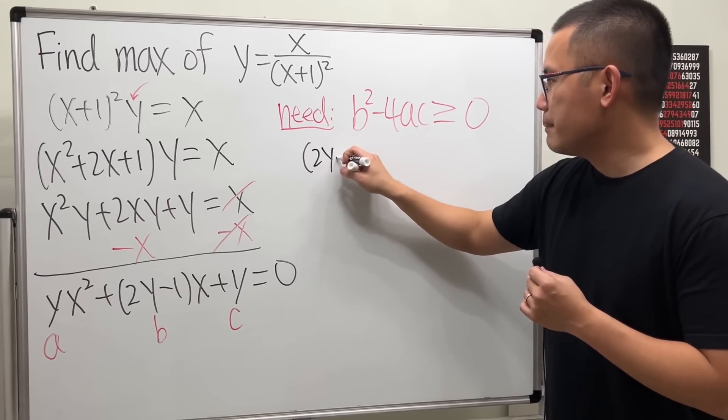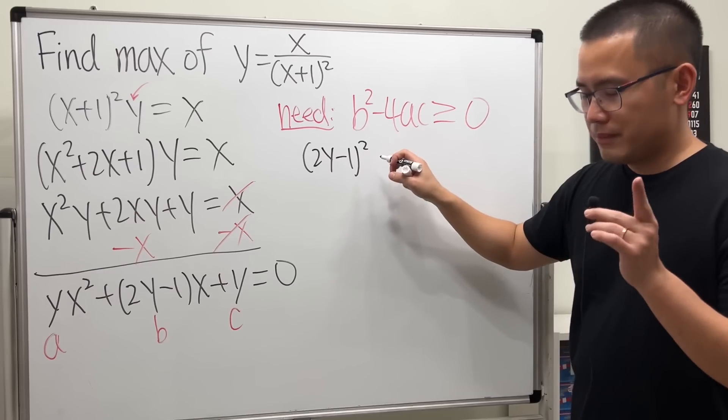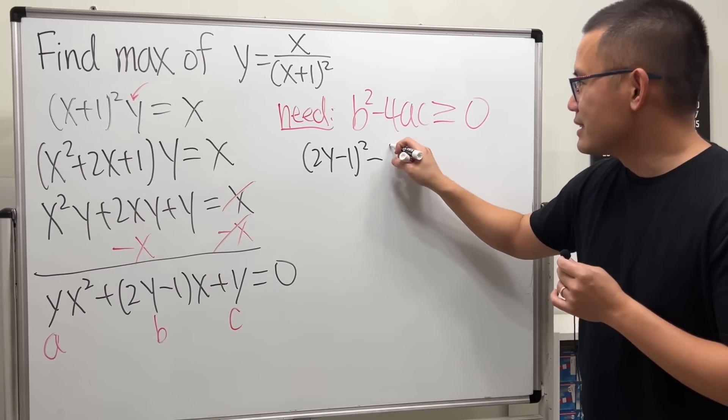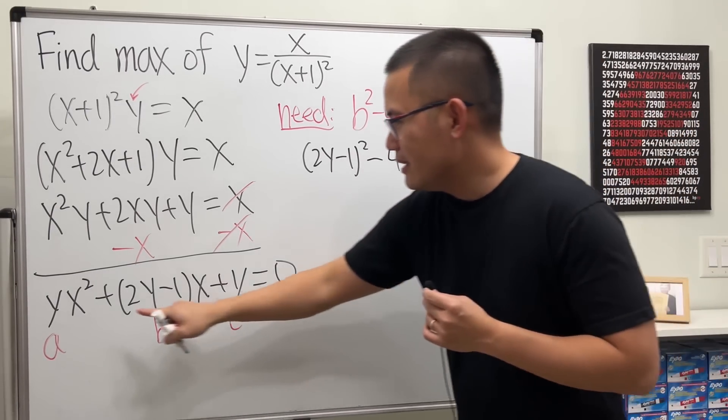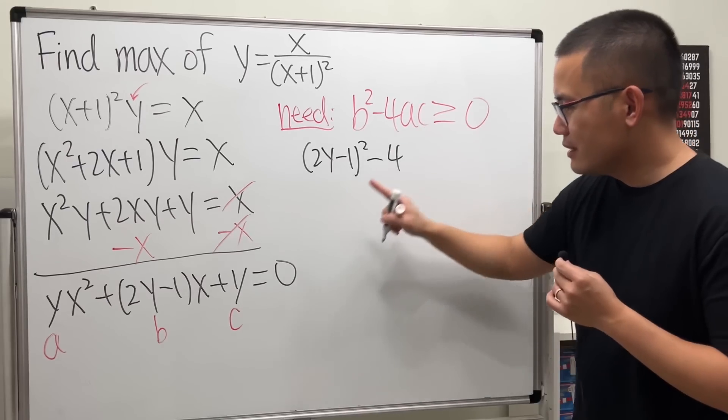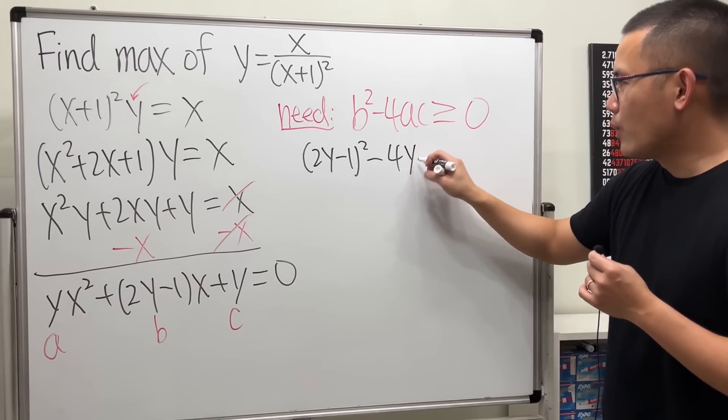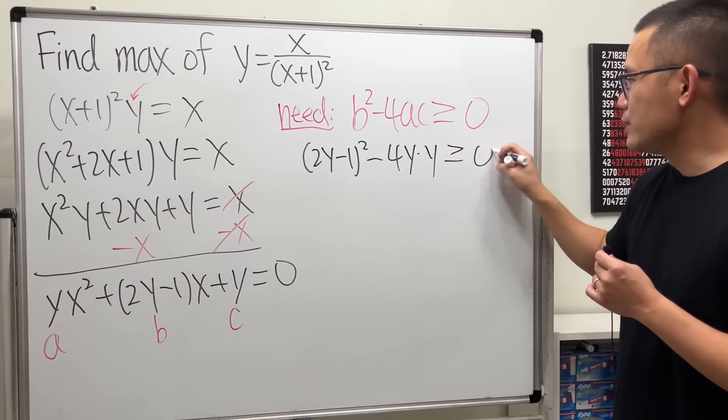We have (2y - 1) squared minus 4a is y, c is also y. So, let's multiply y and y. We still want this to happen. And then, just work this out.